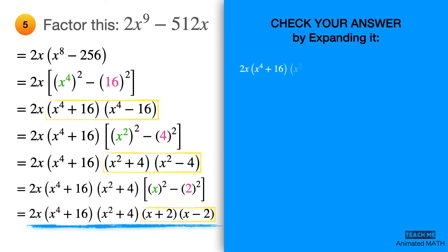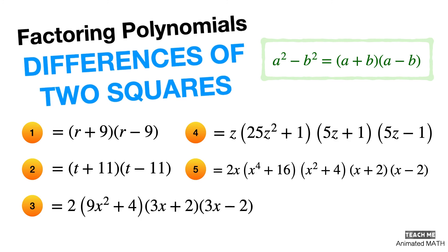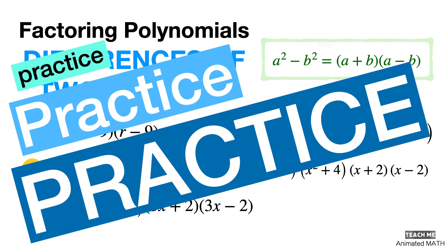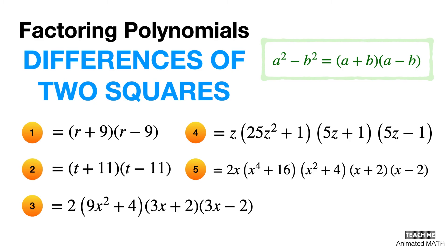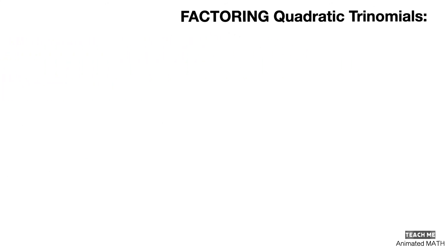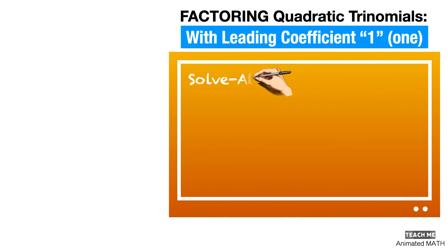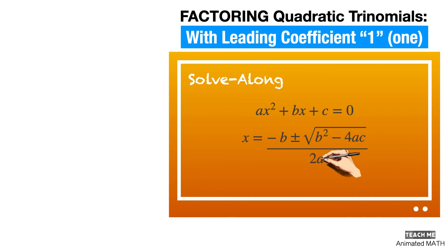Don't forget to check your answer by expanding it using polynomial multiplication as shown here. Here is the answer key for this worksheet. I hope you learned a lot about factoring differences of two squares in this solve-along video. Just practice until factoring differences of two squares becomes second nature to you. Don't be afraid to make mistakes, since correcting them is part of your learning process. Our next solve-along video is about Factoring Quadratic Trinomials with Leading Coefficient 1, which involves trial and error — we've split it into multiple parts to make it easier to understand, with step-by-step solutions that are very easy to follow.